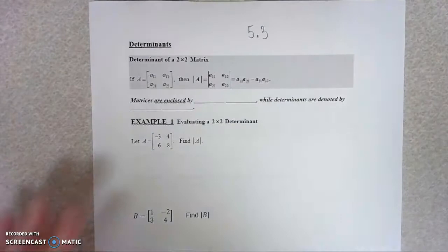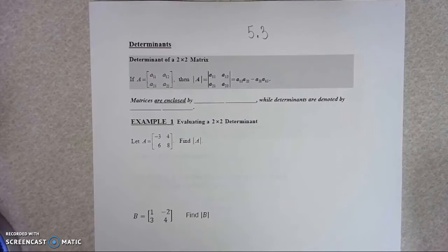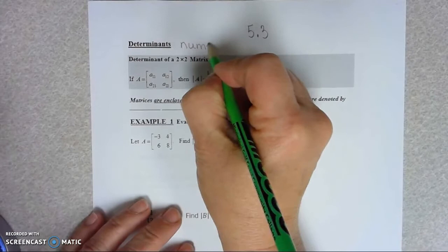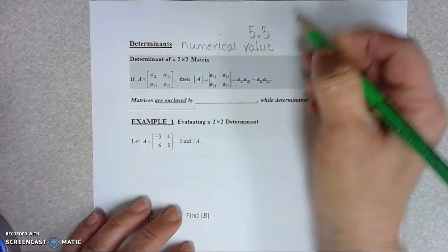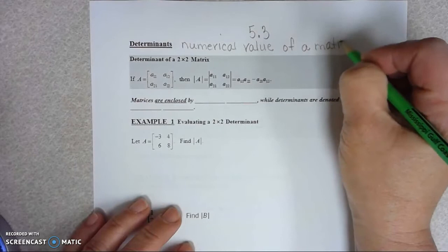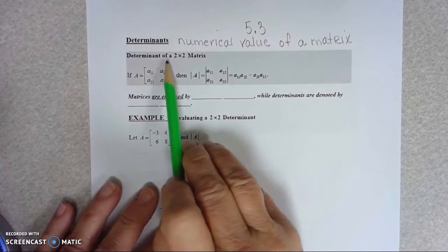This is Section 5.3 and there's only a couple of concepts that I want us to talk about. It is determinants of matrices. Determinant is a numerical value of a matrix, so we can jot that down. It's going to end up being just one number.